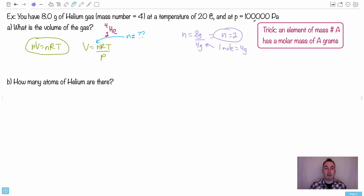So again, just to make sure this makes sense because of this trick, it tells you that this mass number of 4 tells you that one mole of helium is going to have a mass of 4 grams. That's the definition, right? A molar mass means a mass of one mole.